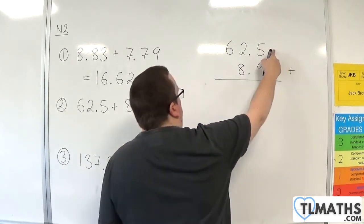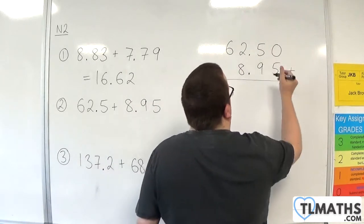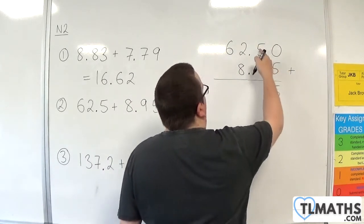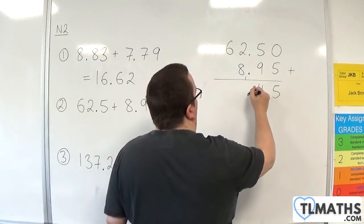Now, I've got this missing space over here on the right-hand side, so I can fill that with a 0. 0 plus 5 is 5. 5 plus 9 is 14. So, 4 carry the 1, bring the decimal point down.